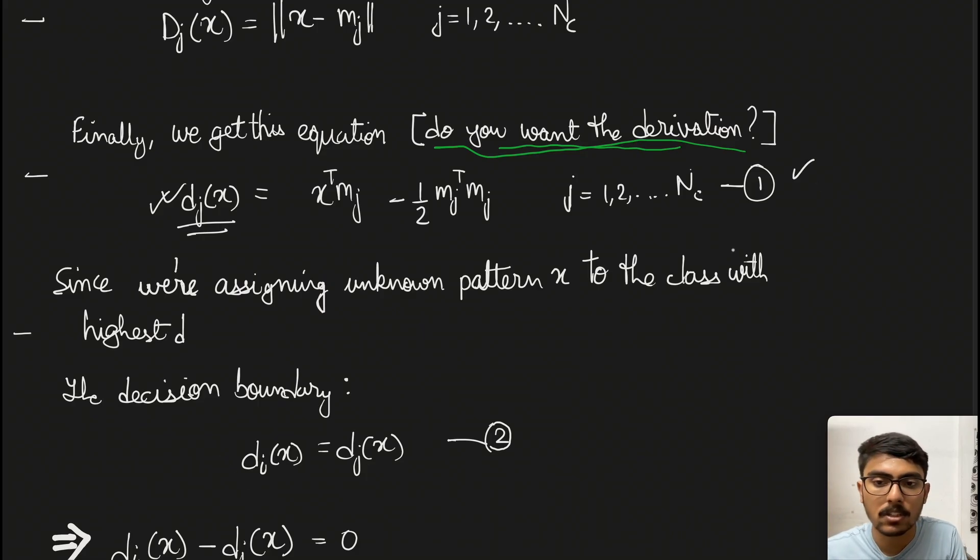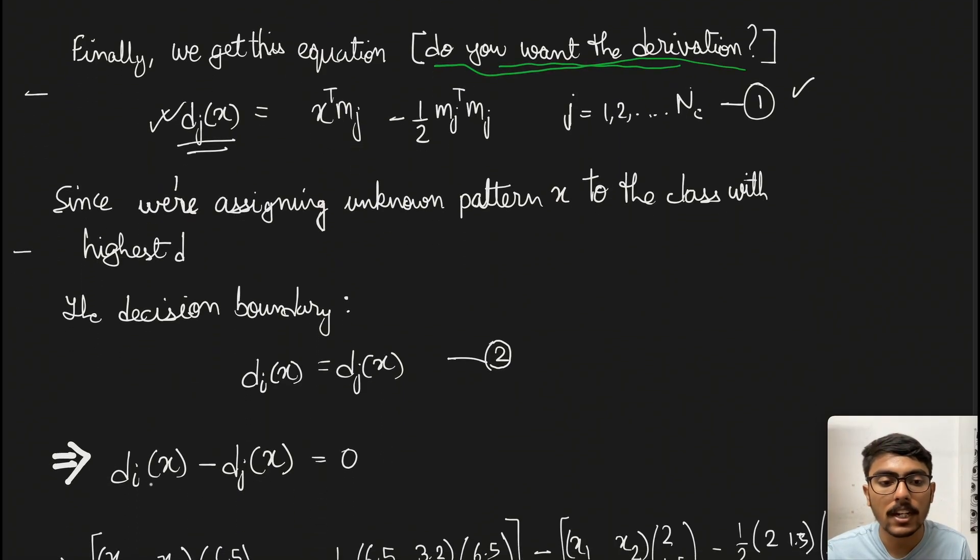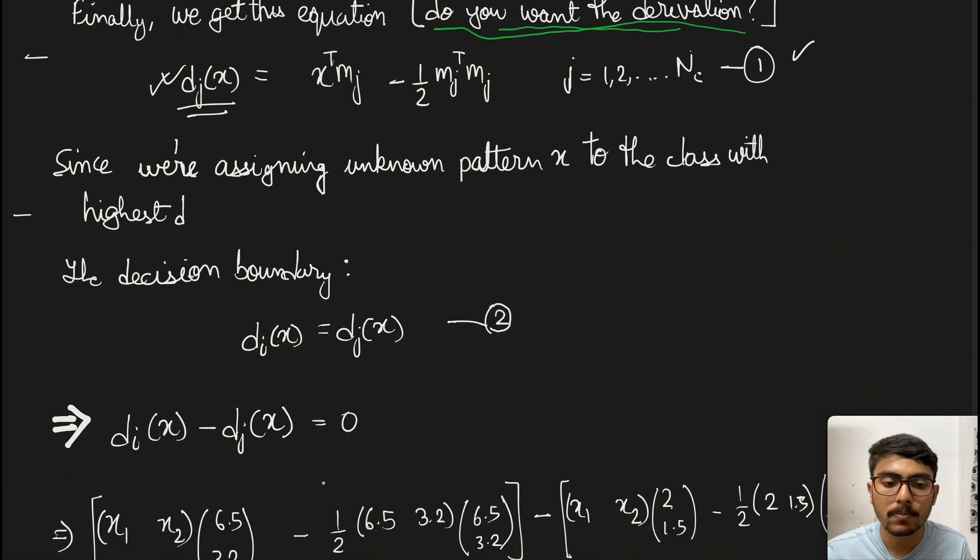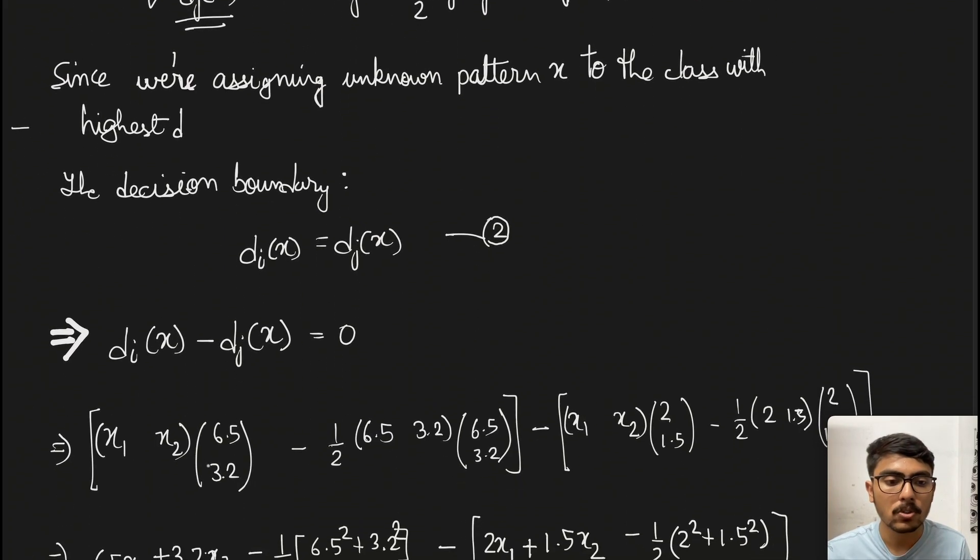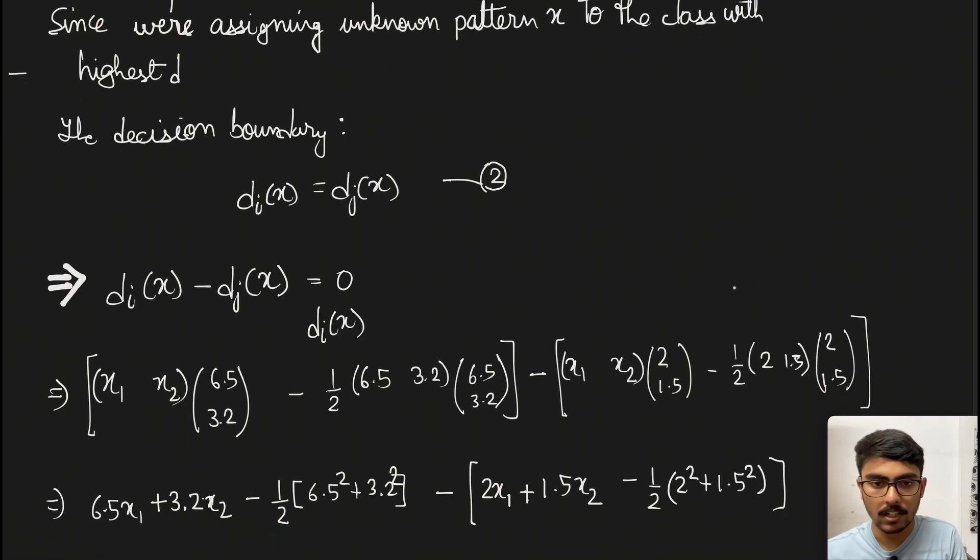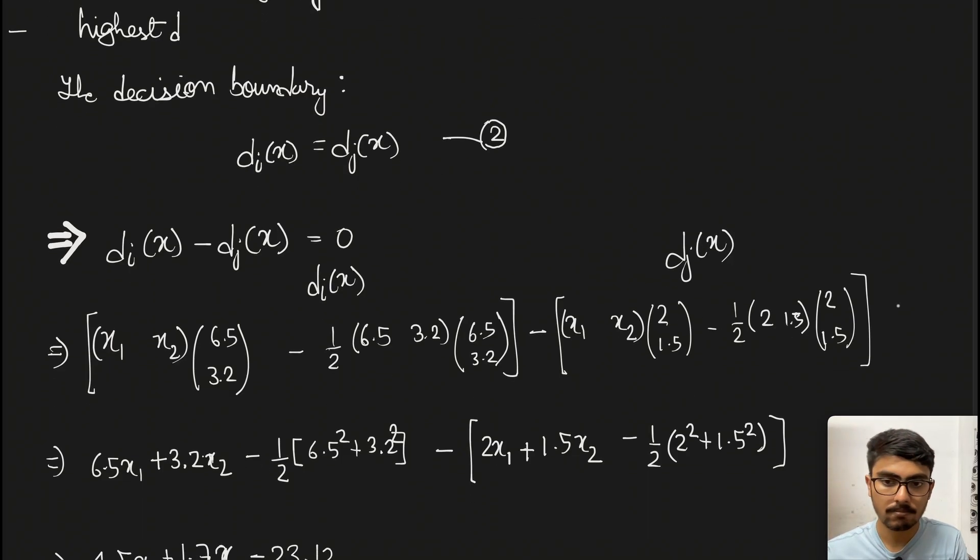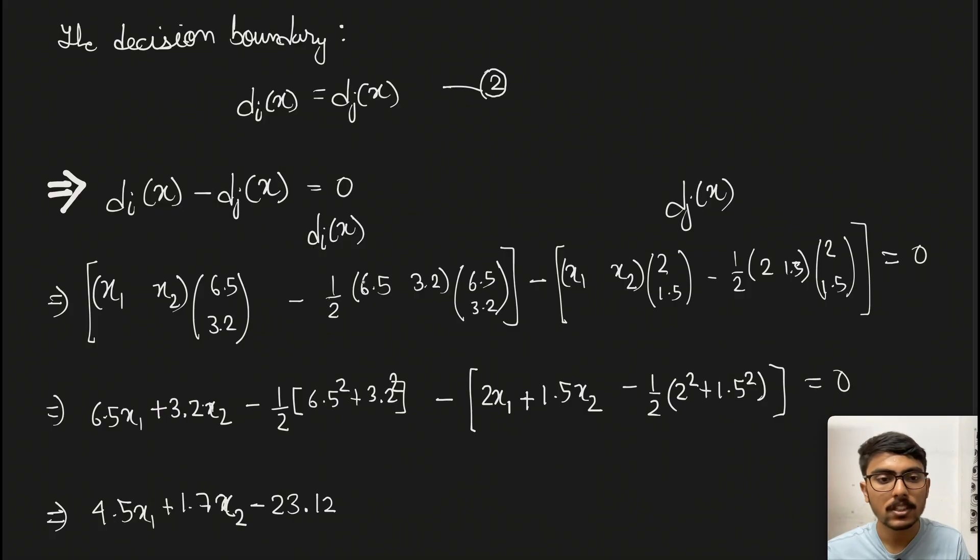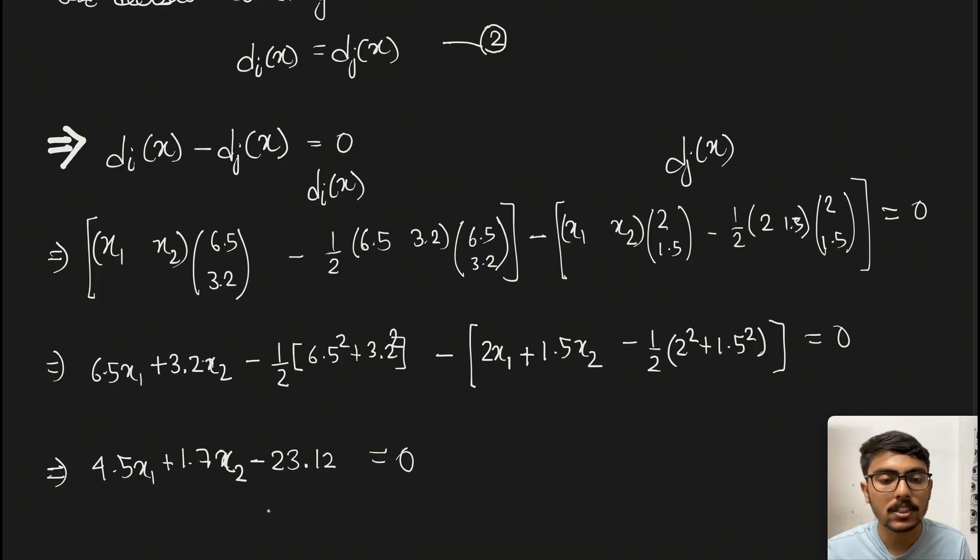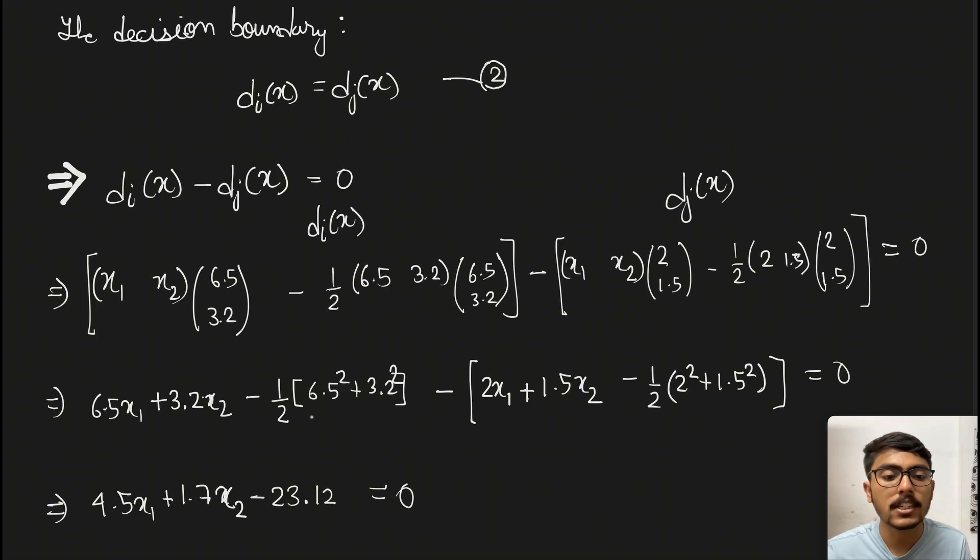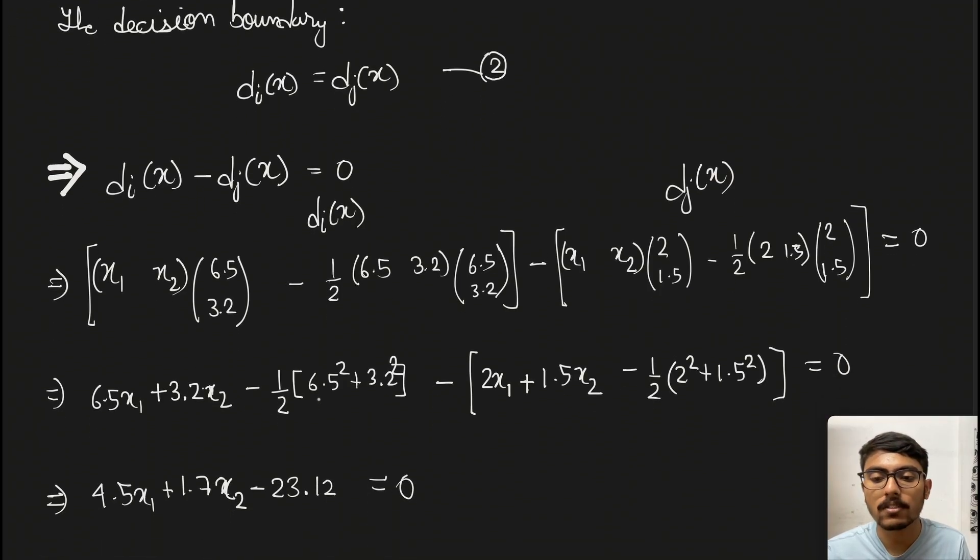Let's mark it as equation 2 and this as equation 1. Rearranging, we get di(x) - dj(x) = 0. Then we put values from the question. This is 6.5 and 3.2, those are written here, then minus half of this. This is for di(x) and this is for dj(x). After simple math, we get 4.5x1 + 1.7x2 - 23.12 = 0. Let me know if the calculation is correct. This is how we calculate the decision boundary for two pattern classes using minimum distance classifier.